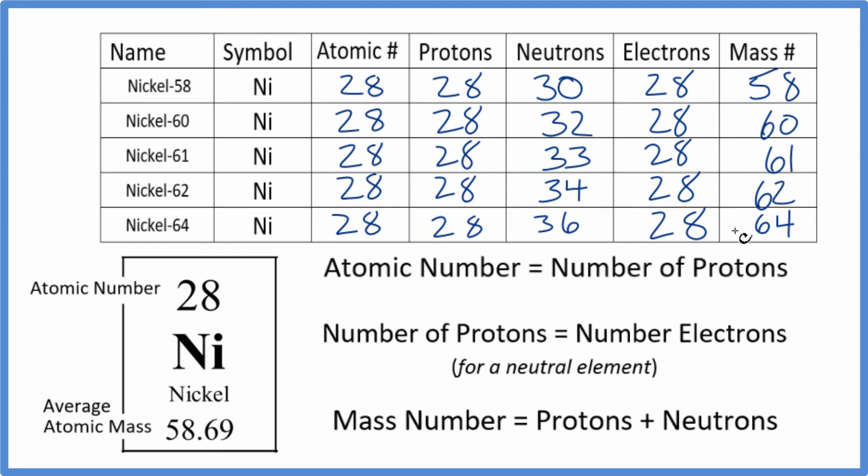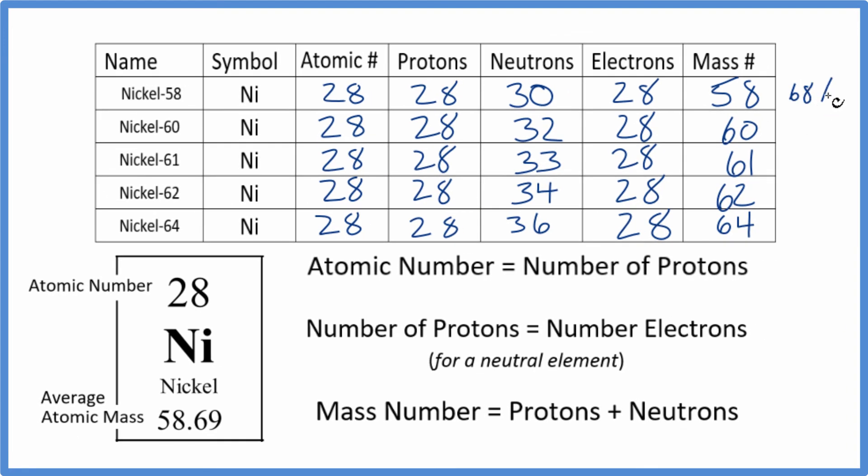So if we had a sample of nickel, a piece of nickel metal, all of these isotopes would be present. But most of it, about 68%, would be this nickel-58. Then we'd have other percentages for these other ones.